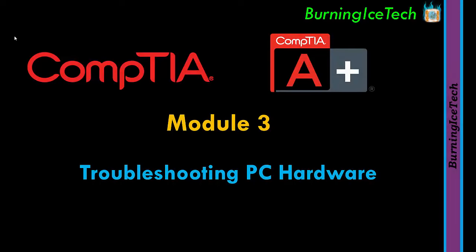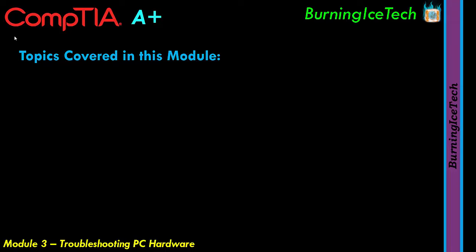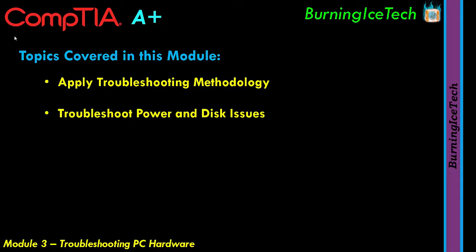Hey, what's up guys, welcome to Module 3 of the CompTIA A+ course. This module is titled Troubleshooting PC Hardware, and it's based on the 1100 series of A+. The main sections we'll be covering are: apply troubleshooting methodology, troubleshoot power and disk related issues, and troubleshoot system and display related issues.